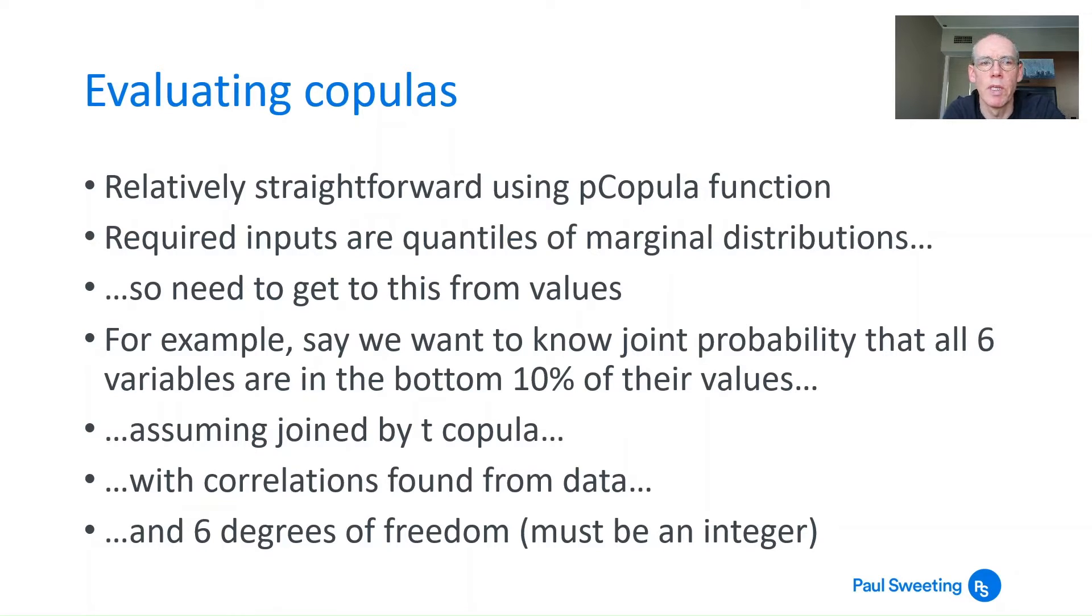First, evaluating copulas. This is relatively straightforward using the pCopula function. The inputs you need are the quantiles of the marginal distribution. You need to get this from the values to work out what quantiles you want to have. Once you've done that, it's very straightforward.